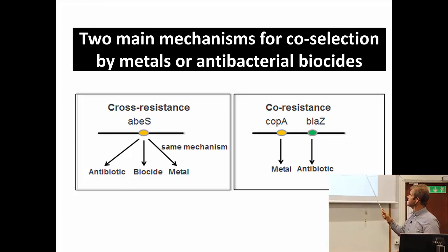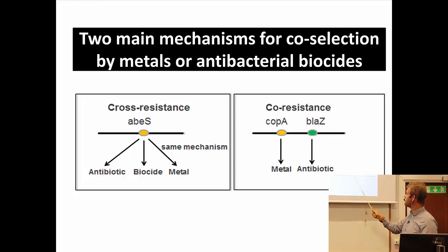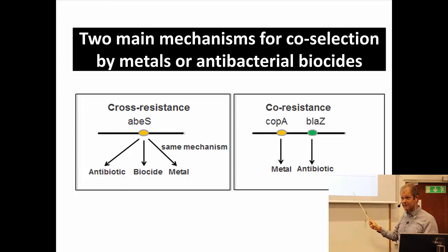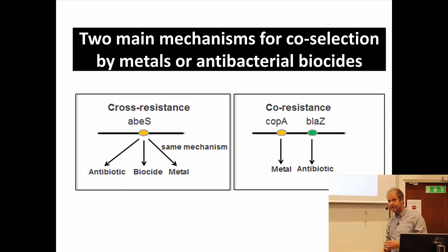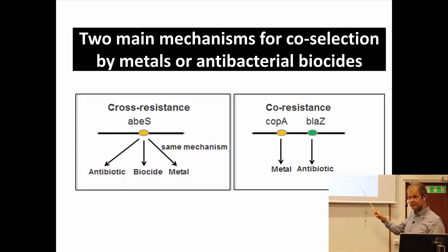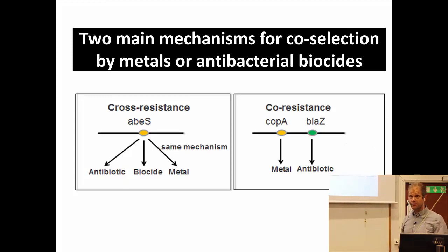Another type of co-selection is co-resistance, where different genes and different proteins provide resistance to antibiotics and to the metal or biocide, but they happen to be co-located — they sit together, are inherited together, for example on the same plasmid. This bacterium would then be selected if you expose the community to that metal; it would grow better than the others in competition, and it happens to be antibiotic resistant.